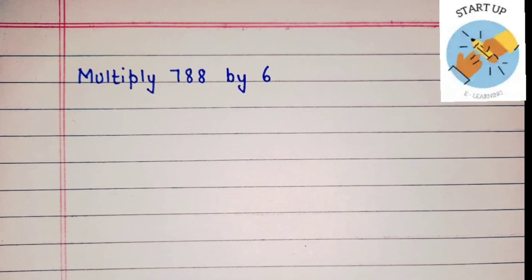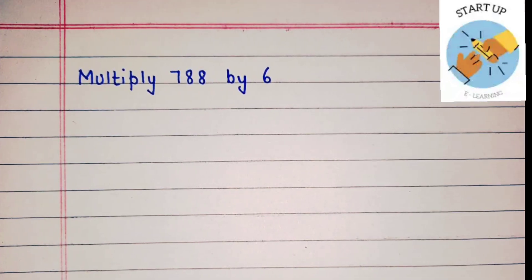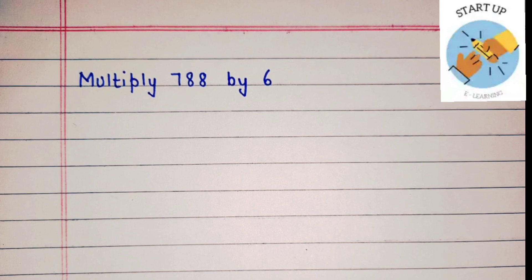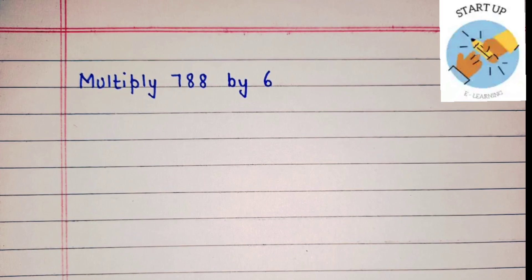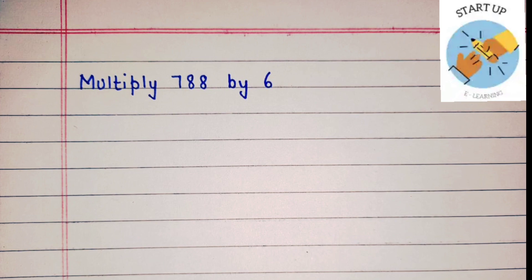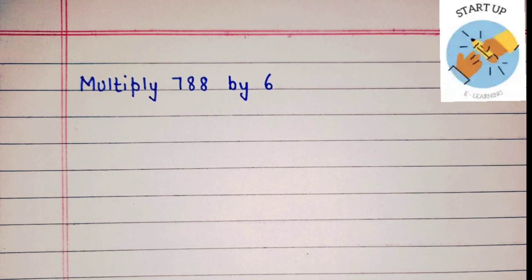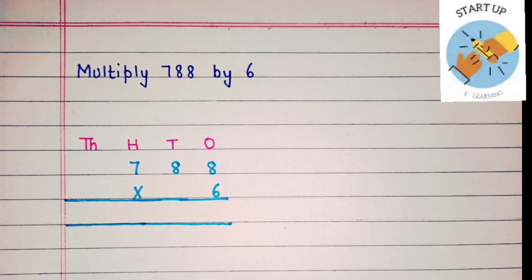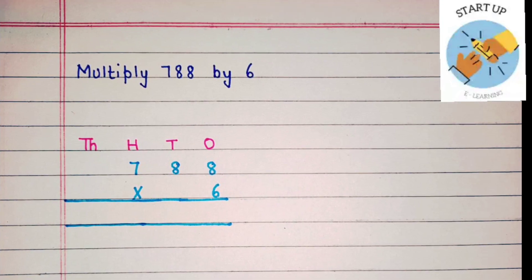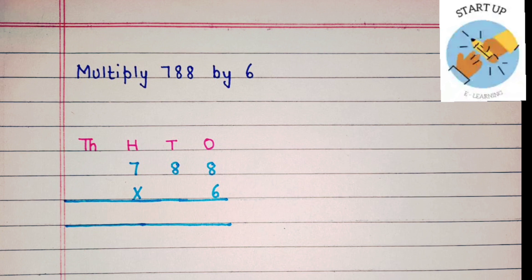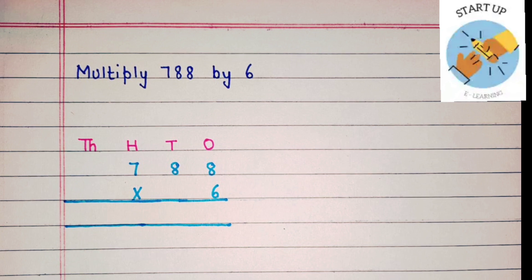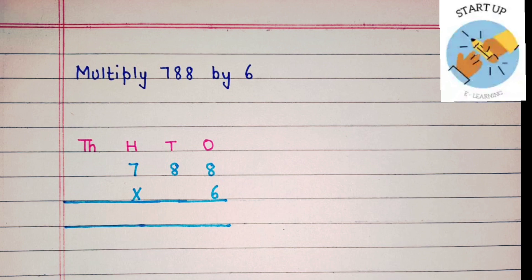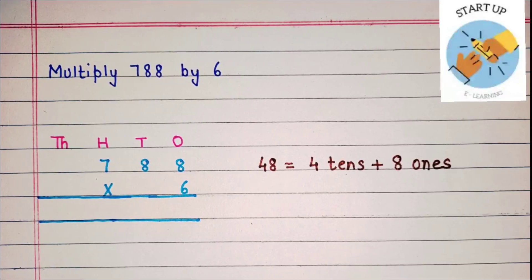Hey kids, have you heard? Practice makes a man perfect. So let's practice one more sum. Multiply 788 by 6. And you know, this answer we will get in the thousands. Let's arrange this number according to its places. First 8 will be written under 1's, second 8 will be written under 10's, and 7 will be written under 100's. We are going to multiply it by 6, and it is a single digit, so again it will be written under 1's. Start the multiplication.